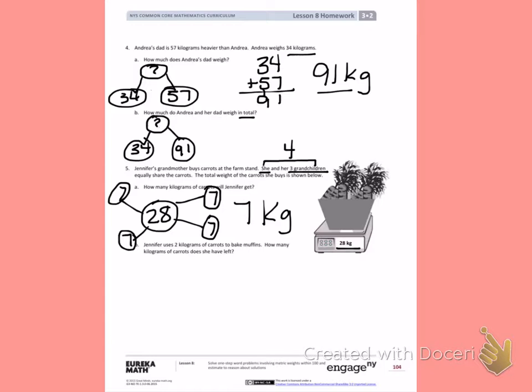Jennifer uses two kilograms of carrots to bake muffins. How many kilograms of carrots does she have left? Jennifer started with seven kilograms. She used two kilograms. Use this picture to help you create a number sentence to show how many Jennifer will have left.